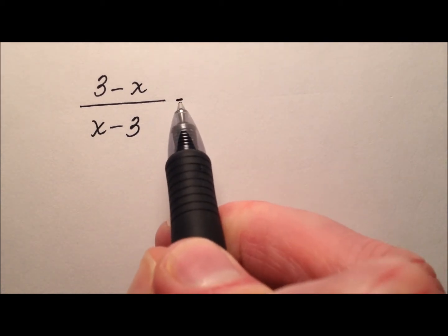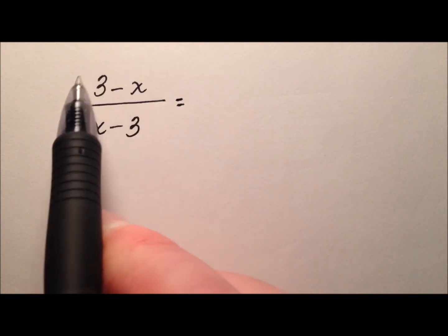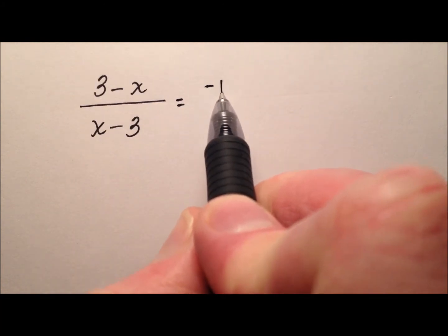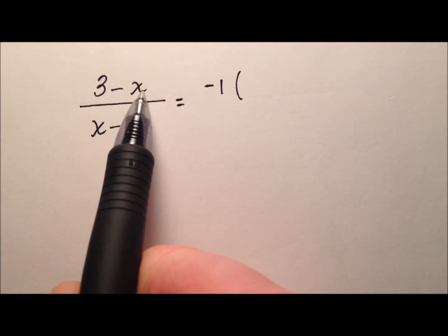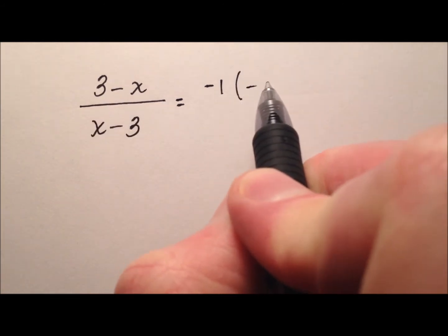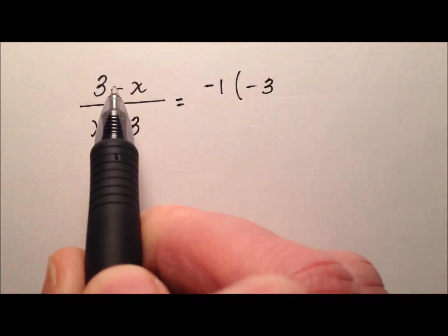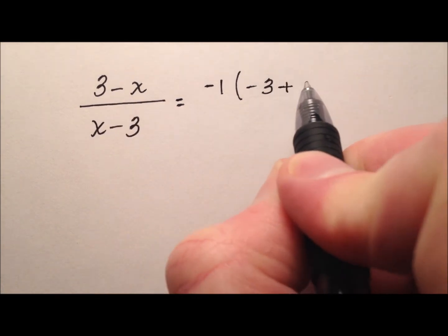So what we're going to do is factor out a negative 1 from the numerator. When we do that, we're going to be dividing each term by negative 1. So the 3 becomes negative 3 and the negative x becomes positive x.